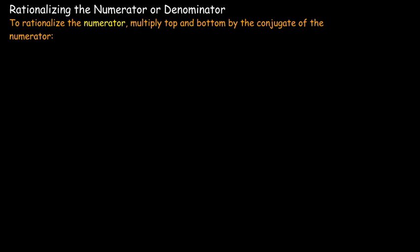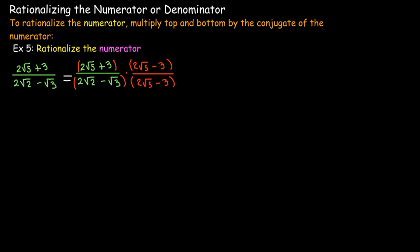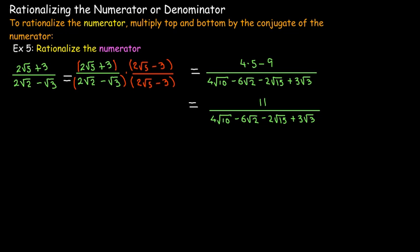Now let's move on to examples where we're rationalizing the numerator. Our focus is on multiplying the expression top and bottom by the conjugate of the numerator. I should be multiplying by 2 radical 5 minus 3 top and bottom. In the denominator I'll have the difference of two squares: 2 radical 5 squared is 4 times 5 equals 20, minus 9, giving 11. The numerator gives four radical terms — 4 radical 10, minus 6 radical 2, minus 2 radical 15, plus 3 radical 3 — which cannot be simplified further as there are no like terms.